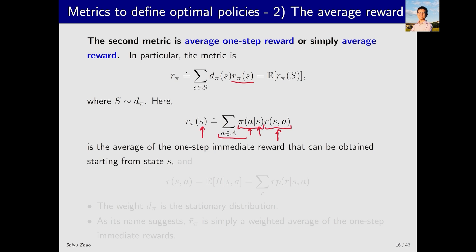This can also be written in the following form. If I take action a in state s, the immediate reward I get is r(s,a). Then, I take the weighted average or expectation over all possible actions to obtain r_π(s), which is the average immediate reward for state s. Finally, by taking the expectation or weighted average over all states s, we get r̄_π, which is the second metric.